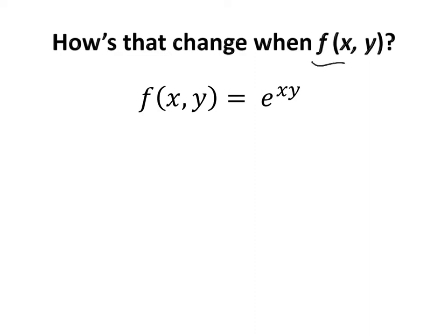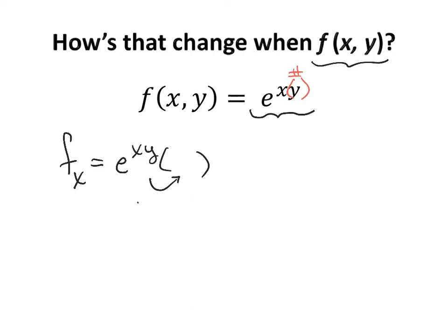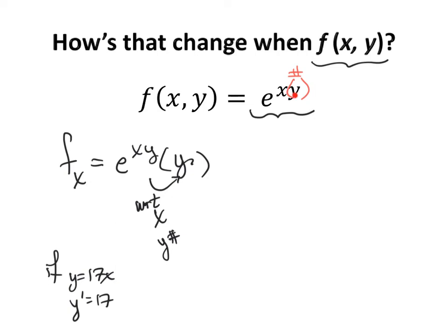Now how does that change when you have a function of two variables? This is where partial derivatives come in. Let's go ahead and take the first order partial derivative with respect to x. What that means is that y is just a number. So when we take the derivative with respect to x, we rewrite the function as it is, then chain rule out the derivative with respect to x, where y is just a number. The derivative of xy with respect to x is just y — just like the derivative of 17x is 17. When two letters appear and one is the variable and one is a number, the number acts like a coefficient and comes along for the ride.